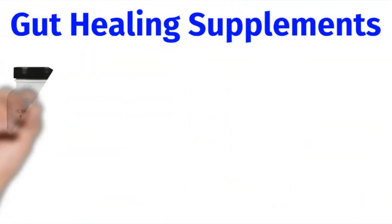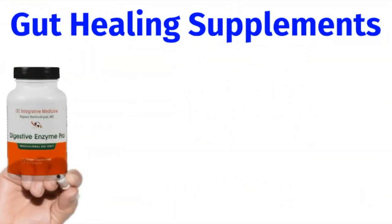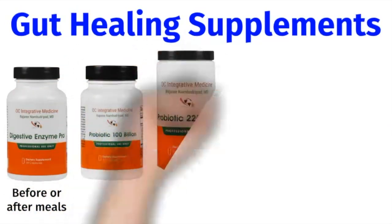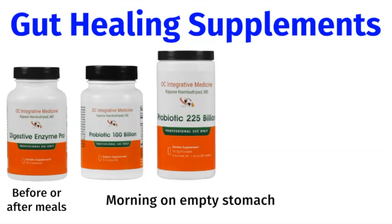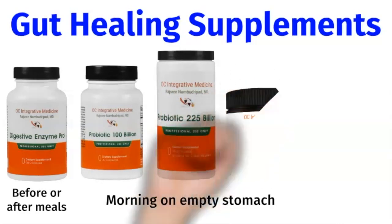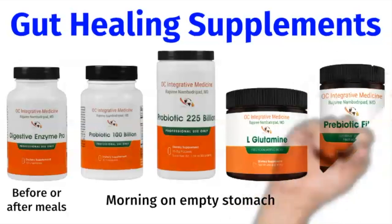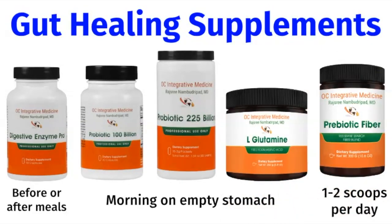Addressing your gut microbiome is also important for your brain, so here are some gut healing supplements. Digestive Enzyme Pro helps you to digest your food better so that you can absorb more nutrients. Probiotic 100 billion and 225 billion are high-quality probiotics that can strengthen the good bacteria in your microbiome. L-glutamine is an amino acid powder that can help heal inflammation in the gut lining. Prebiotic fiber has resistant starches that can help to keep you full and feed all the good bacteria in your microbiome.